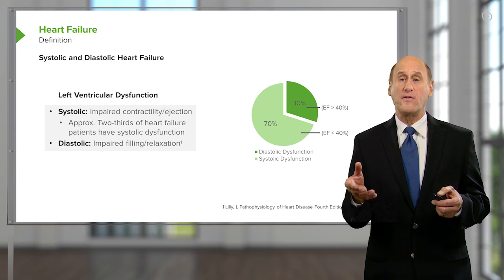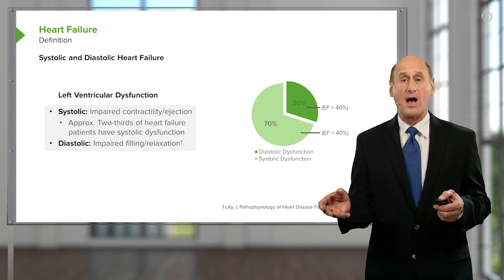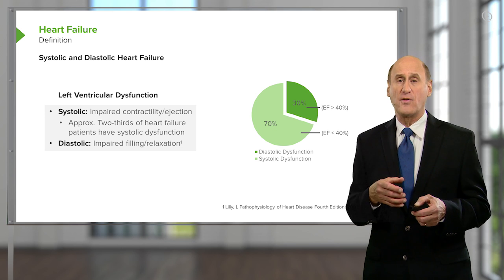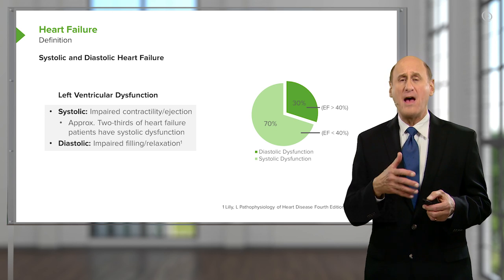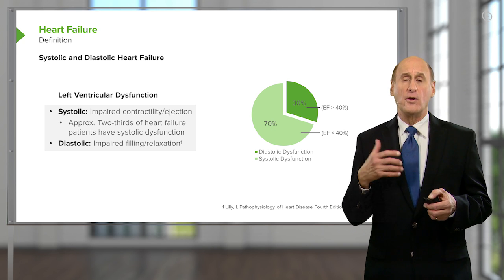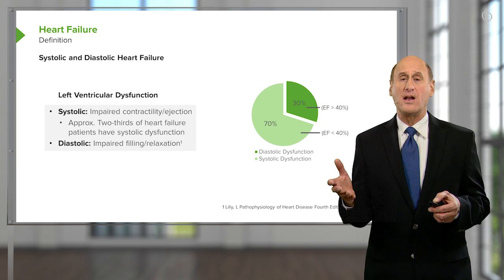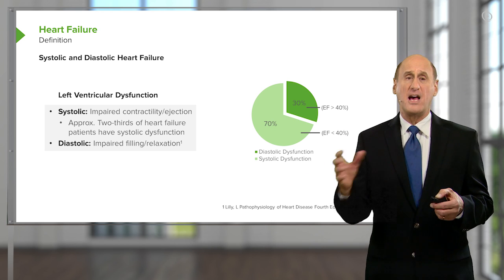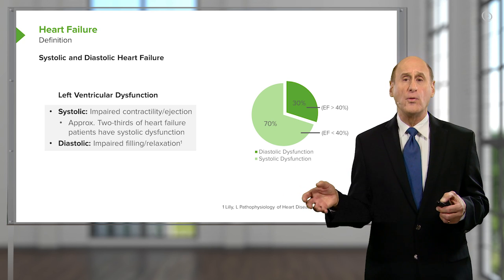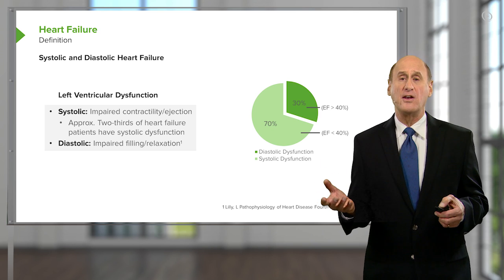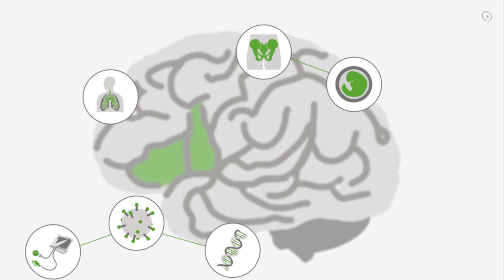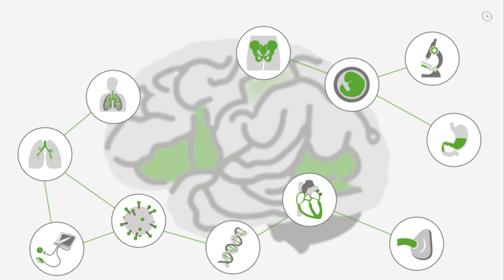Most patients with heart failure have both systolic and diastolic, but there is a whole group of patients — a minority, as you can see from the circle diagram here — who have pure diastolic heart failure. Interestingly, the long-term prognosis for diastolic heart failure is just as bad as for systolic heart failure. Diastolic heart failure tends to occur in older individuals, often with thickened heart muscle.